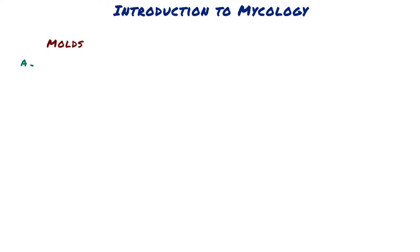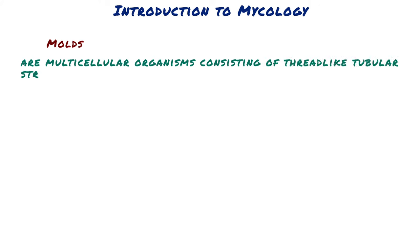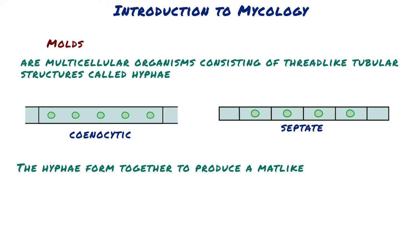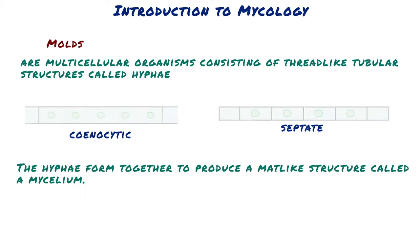Moulds, on the other hand, are multicellular organisms consisting of thread-like tubular structures called hyphae that elongate at their tips by a process known as apical extension. Hyphae are either coenocytic or septate. The hyphae form together to produce a mat-like structure called a mycelium. The colonies formed by moulds are often described as filamentous, hairy, or woolly.